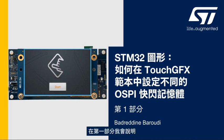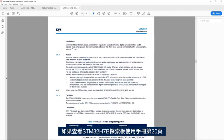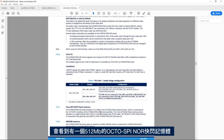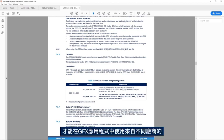In this first part we'll see how to set up the OctoSPI peripheral in STM32CubeMX. If we look at page 20 of the STM32H7B discovery board user manual, we see that it has a 512 megabit OctoSPI NOR flash memory. In this video we'll see what changes need to be done to use a different memory from a different vendor and a different flash size in the TouchGFX application.